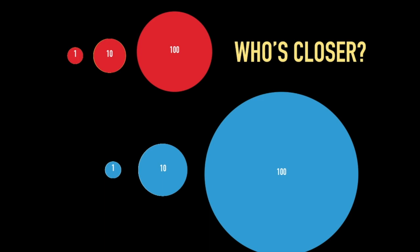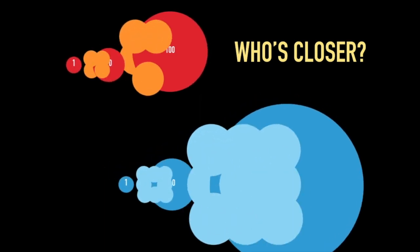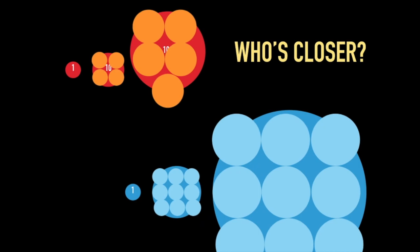If the shape representing the next larger place value is nine or eleven times larger instead of exactly ten times larger, that's probably okay. But if it's only five times larger, or twenty times larger, that's not reasonable. The ability to estimate sizes is critical here. Who's closer here, red or blue? Tell your elbow partner. Red was about four or five times larger, but blue was really close, at least nine times larger.